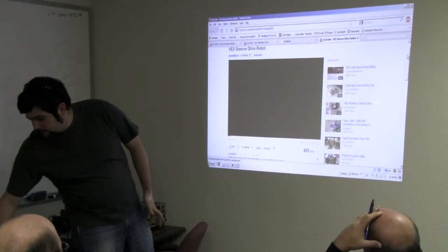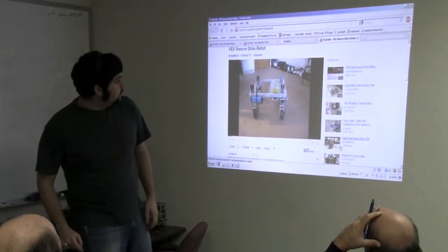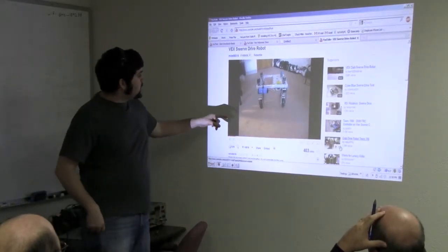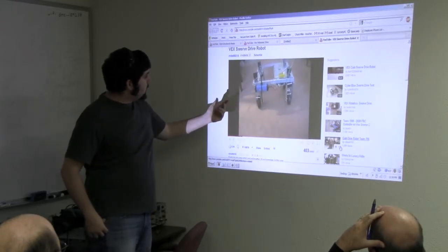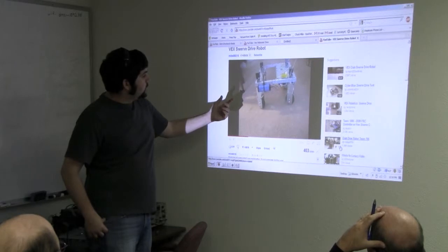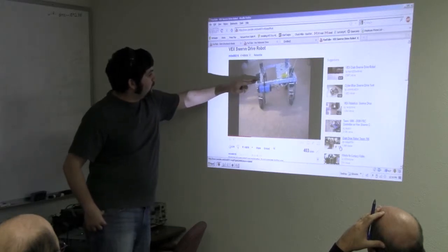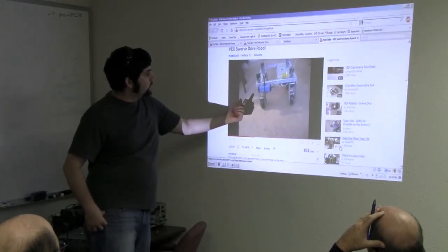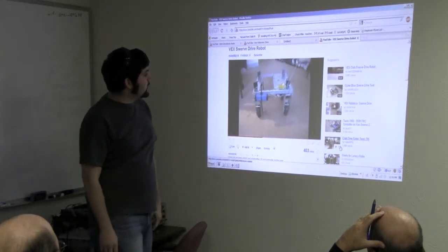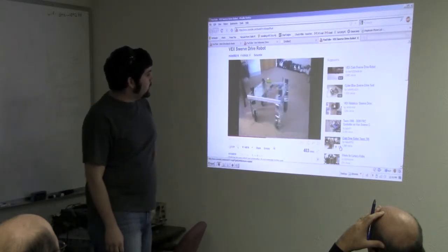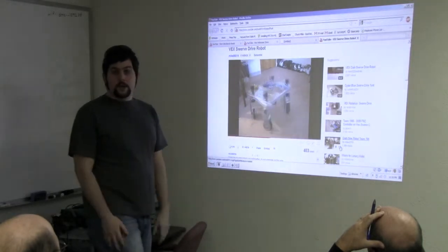So this is the Vex Swerve drive box. And you can see each one of the modules itself will rotate about itself. So instead of the actual platform turning, the individual modules spin. And that allows for some really neat movement like spinning within itself and going any direction.